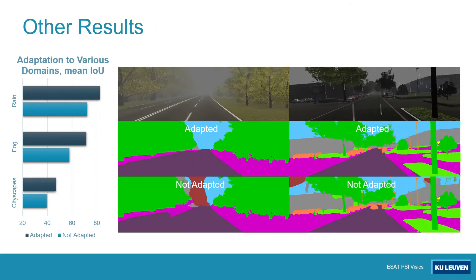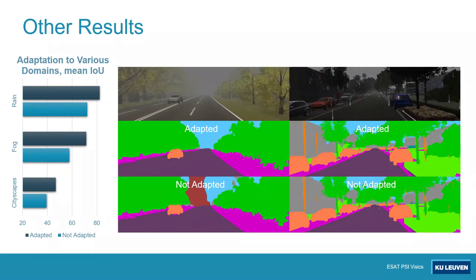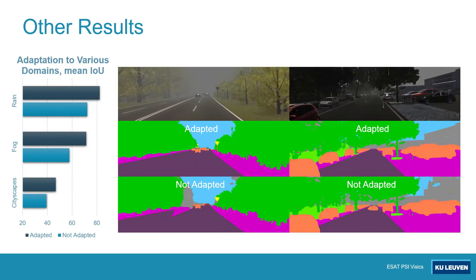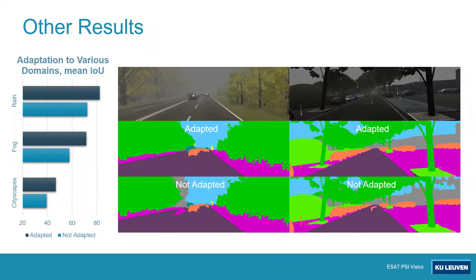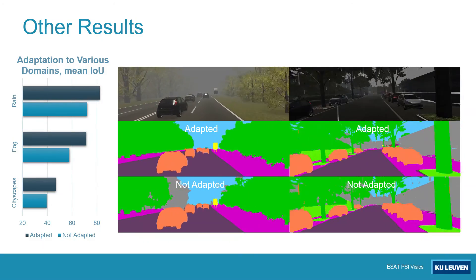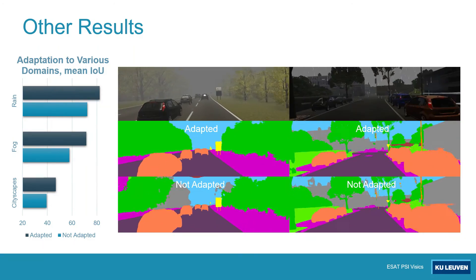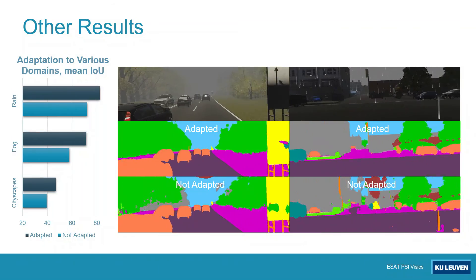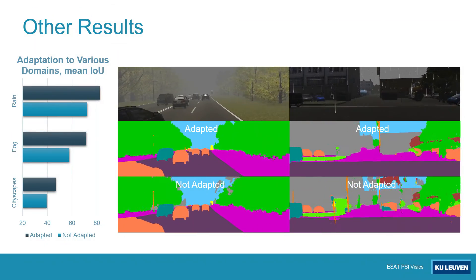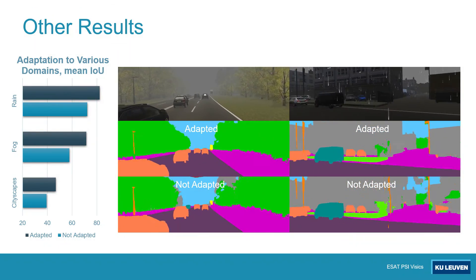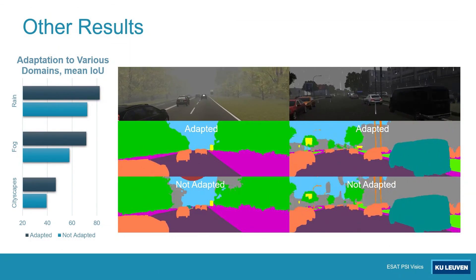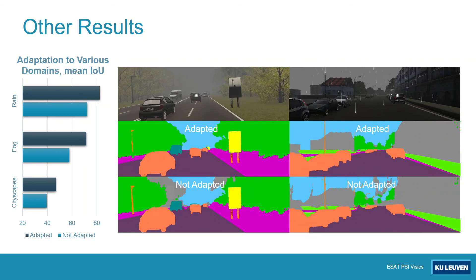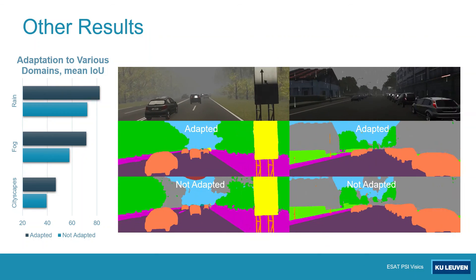We also show that our method generalizes to different scenarios. In particular, it performs well not only in the simulated-to-real setup when adapting to KITTI or Cityscapes, but also greatly reduces the artifacts caused by deploying a model trained using sunny data in foggy or rainy weather.